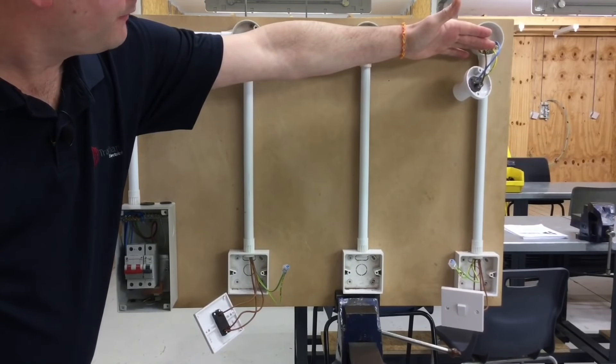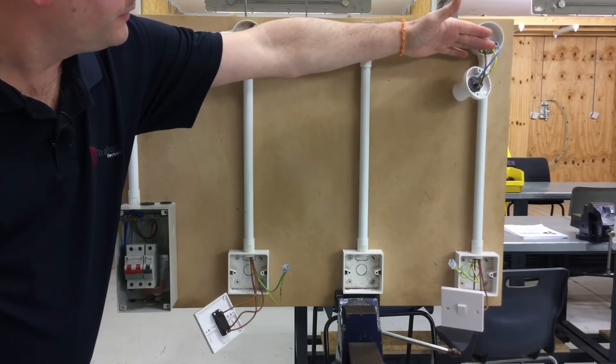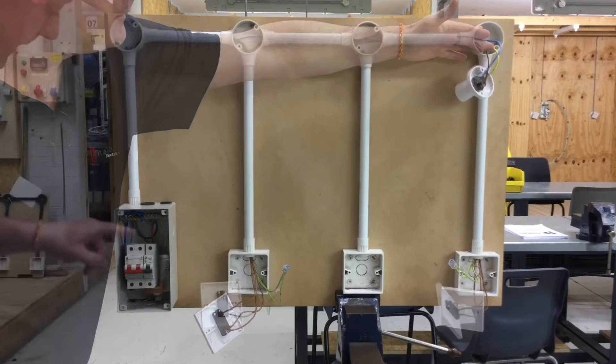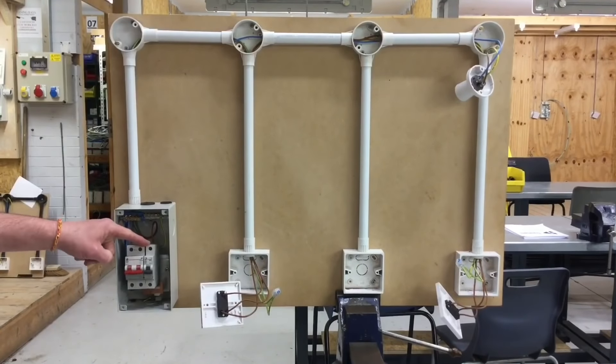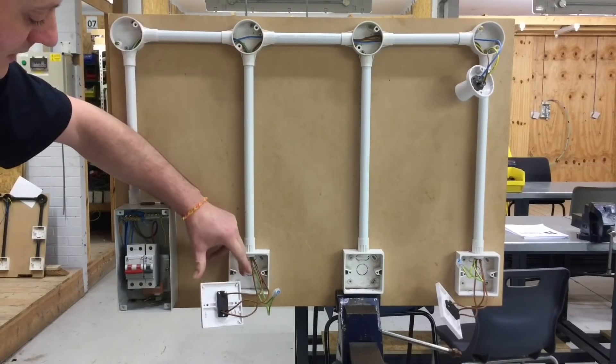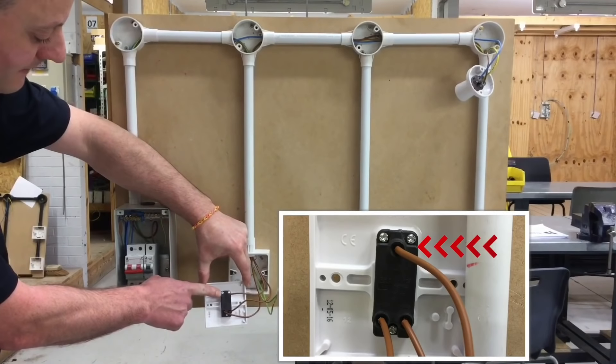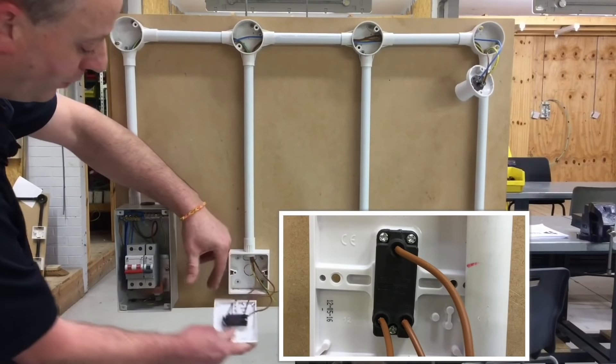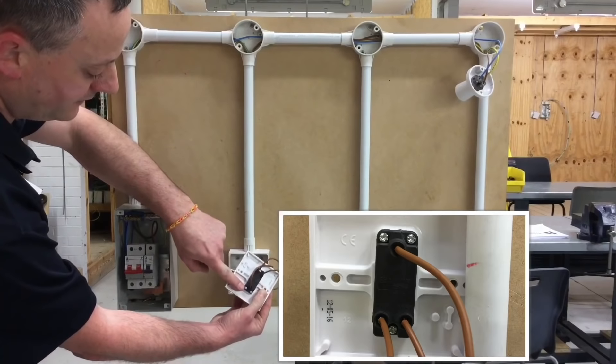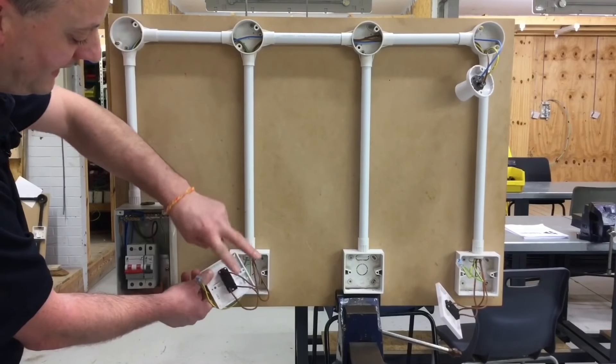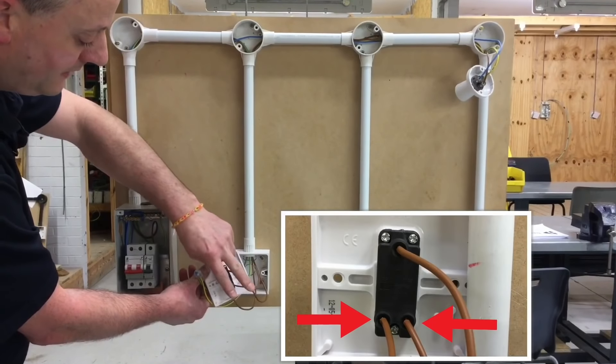A line conductor starts at the top of the six amp circuit breaker. A permanent line comes down into the first switch and is terminated into the common termination, doesn't matter whether that's at the top or the bottom as long as it goes into the common termination. We then have two brown strappers coming out of L1 and L2 round to the other switch.